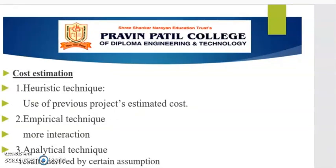This method involves more interaction and communication between those who are participating. The process is as follows: the coordinator represents a specification and estimation form to each expert. The coordinator calls a group meeting in which the experts discuss estimation issues with the coordinator and each other. The coordinator and experts fill out forms anonymously. The coordinator prepares and distributes a summary of the estimates, then calls another group meeting. In this meeting, the experts mainly discuss the points where their estimates vary widely, and the experts again fill out forms anonymously.